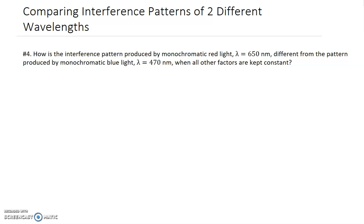Hi everyone. There's a great question asked in the Young's Double Slit homework that says this: How is the interference pattern produced by monochromatic red light of lambda 650 nanometers different from the pattern produced by monochromatic blue light of wavelength 470 nanometers when all other factors are kept constant?